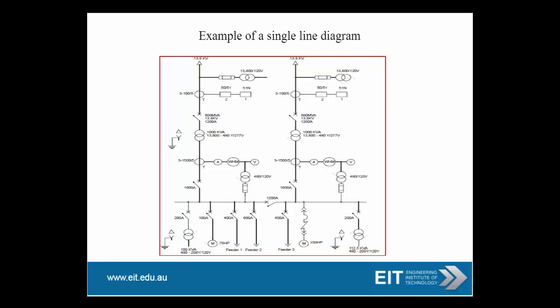You have two incomers and a bus coupler in between, rated at 1200 amps. You have a number of loads — some are transformer feeders, some are motor feeders — different devices and equipment, all shown in a simple format. Pointing out the symbols: that is your fuse and potential transformer, this is your current transformer, that is your circuit breaker, that is your distribution or step-down transformer, that's your CT, circuit breaker, outgoing loads, and this here is your bus coupler.